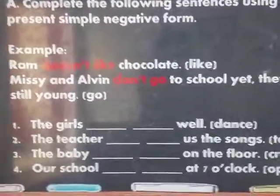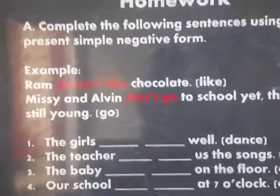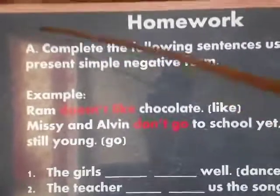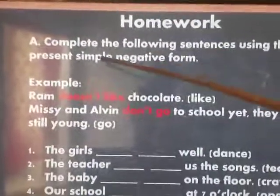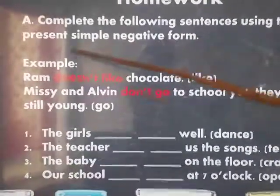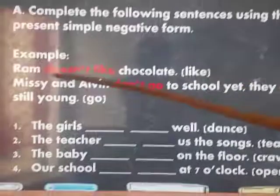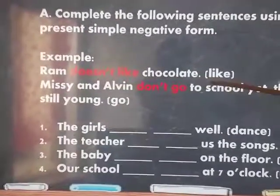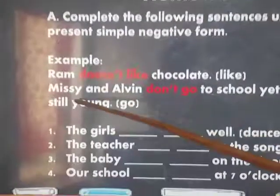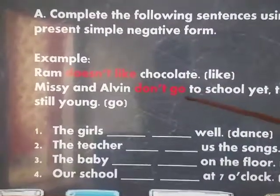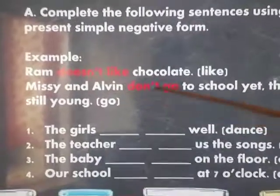For your homework — but first, finish your school work before I give you the homework. Homework A: complete the following sentences using the present simple negative form. For example, 'Rum' is singular, so you use 'doesn't': 'Rum doesn't like chocolate.' 'Missy and Alvin' is plural — more than one — so you use 'don't': 'Missy and Alvin don't go to school yet — they are still young.'